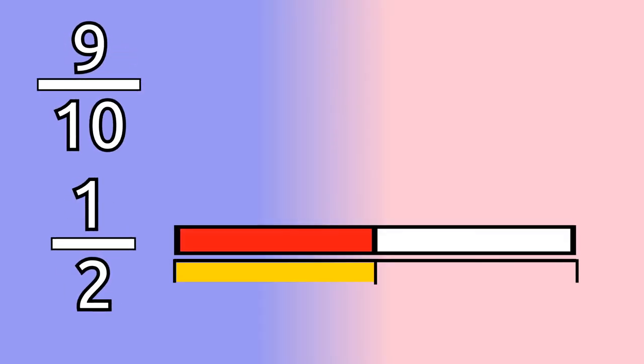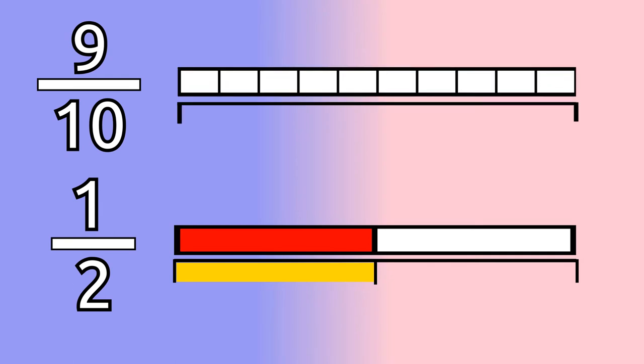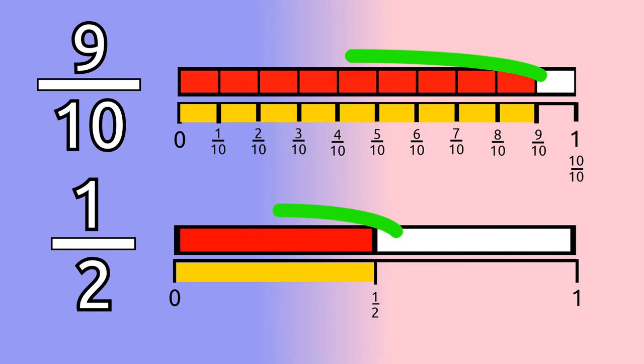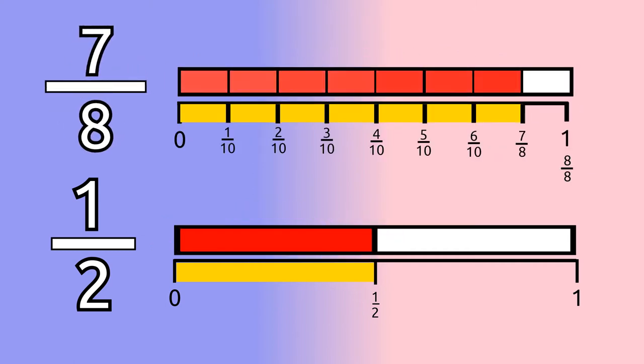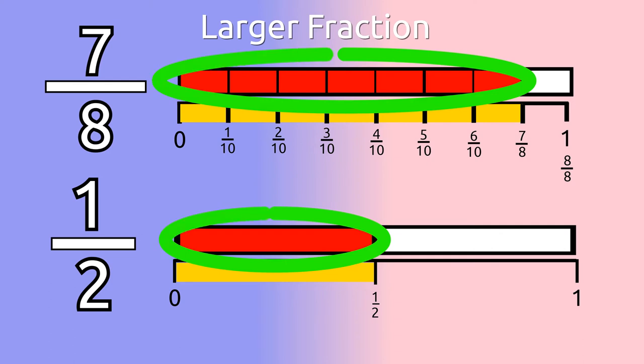If we were to compare nine-tenths to one-half using a fraction bar or number line, we can see that it is a fractional part away from one whole. In other words, only a fractional part is missing from the entire whole being shaded. Seven-eighths as well is greater than a half and is also one fractional part away from one whole.